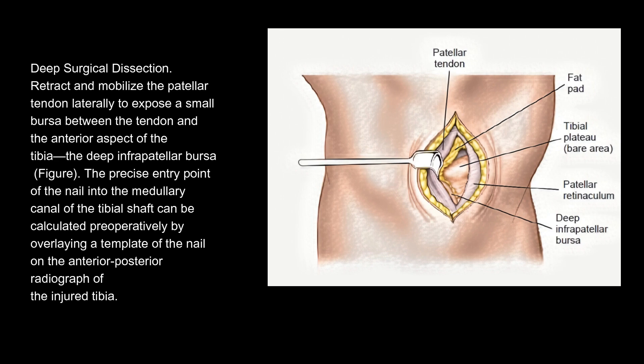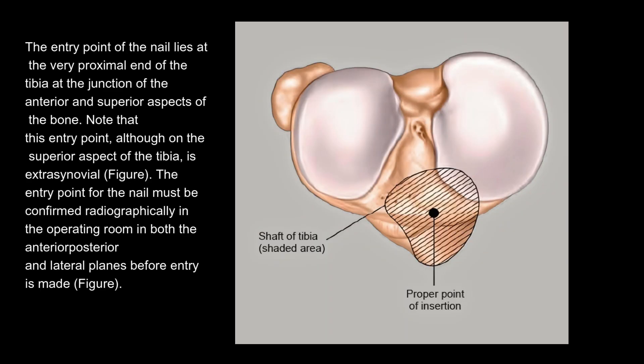Deep surgical dissection: retract and mobilize the patella tendon laterally to expose a small bursa between the tendon and the anterior aspect of the tibia — the deep infrapatellar bursa. The precise entry point of the nail into the medullary canal of the tibial shaft can be calculated preoperatively by overlaying a template of the nail on the anterior-posterior radiograph of the injured tibia. The entry point lies at the very proximal end of the tibia at the junction of the anterior and superior aspects of the bone.